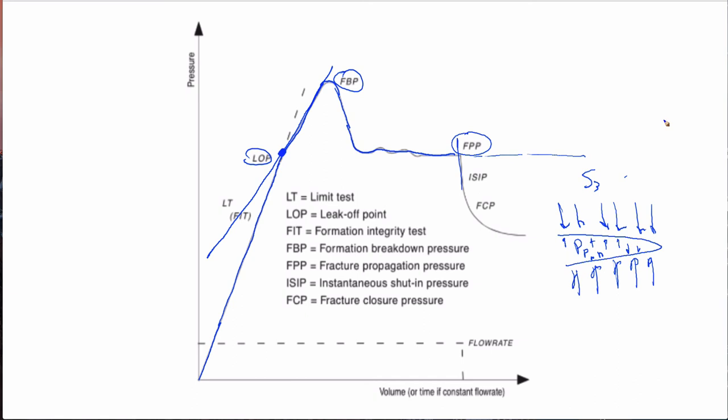If you continue to monitor the pressure carefully, you can actually get the fracture closure pressure. Initially you have an open fracture counteracting S3, but eventually that fracture is going to close due to leak-off. The fluid that's holding the fracture open leaks away, the fracture faces come into contact with one another, and the whole system comes into equilibrium. That instant is called the fracture closure pressure, and if you carry out this extended leak-off test to the end with very careful measurements and can identify the fracture closure pressure properly, that's probably your best estimate of S3.